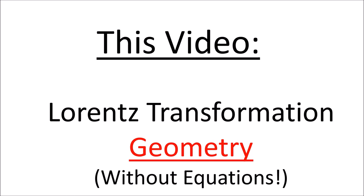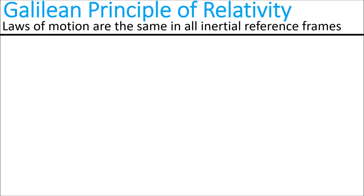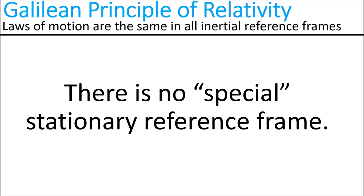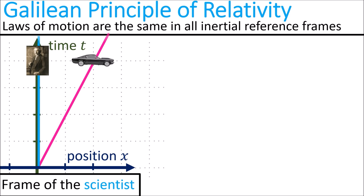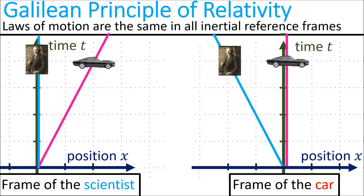So back when we learned Galilean relativity, we said that the laws of motion are the same in all inertial reference frames. We also said that there is no special reference frame that is stationary — all motion that we see is relative to something else. When we plot motion on a spacetime diagram, we can see that the scientist Einstein is standing still and the car is moving off to the right. But it's equally correct to say that the car is standing still and Einstein is moving off to the left. Both diagrams are equivalent; they are just different points of view.